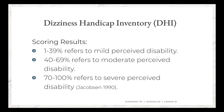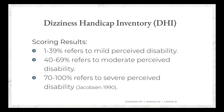With the Dizziness Handicap Inventory, not only can we get a final score to determine mild, moderate, or severe perceived disability, but we can also look at the scores broken down by functional, emotional, or physical domain to see where a patient is scoring more highly. This test has also been found to have good internal consistency and high test-retest reliability. It's a great functional measure to assess someone's perceived disability and to track it over time.